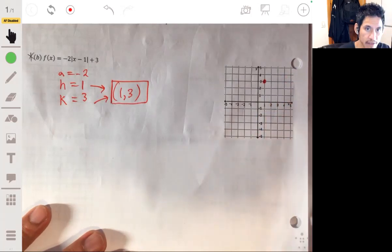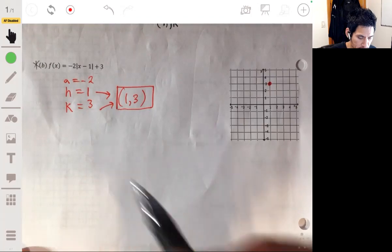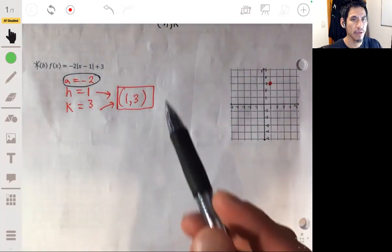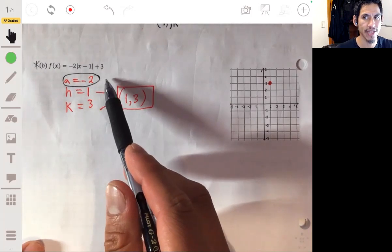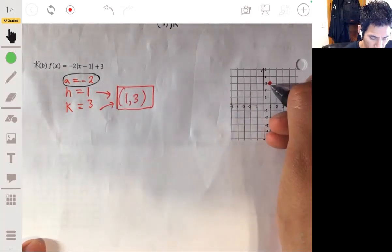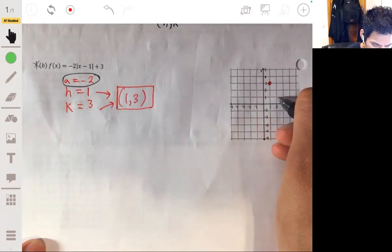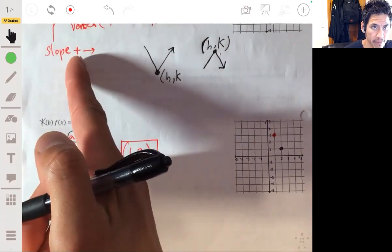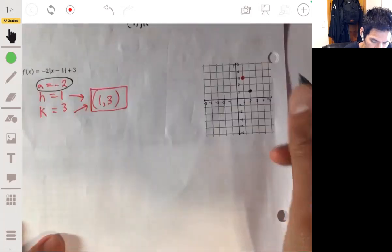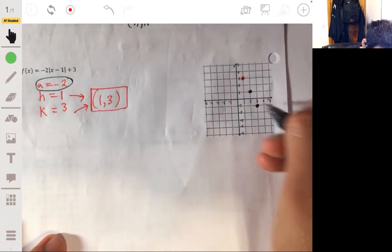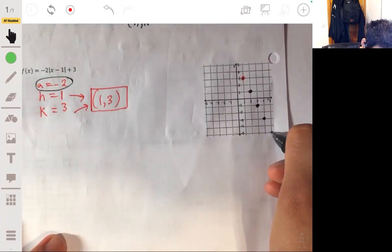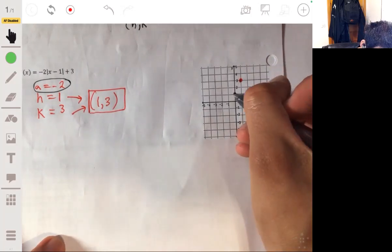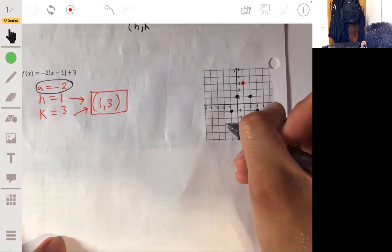And from here we can graph the whole thing. So we graph first the point one three, that's the vertex. And you see that the slope or a is negative two. So think of that as a slope, and to the right we then go down two and to the right one. That's why I'm saying to the right when we talk about slope. So down two to the right one, down two to the right one, we'll run one, and reflect it on the left. And then bang, you got a beautiful V-shaped graph.